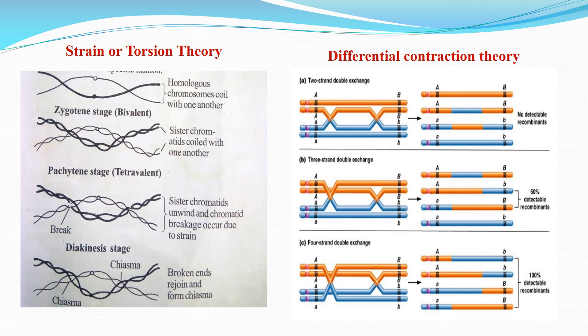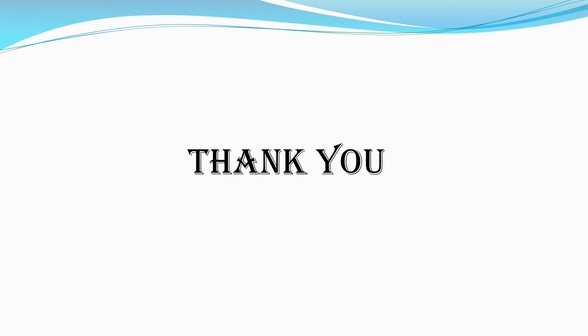Based on the number of chiasmata formed, crossing over may be classified into three types: single crossing over, double crossing over, and multiple crossing over. Thank you very much for your attention.